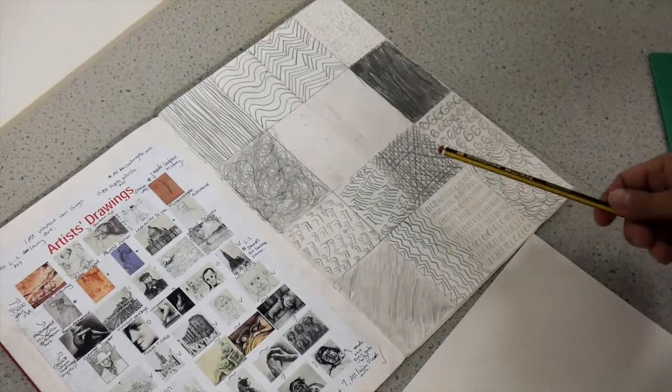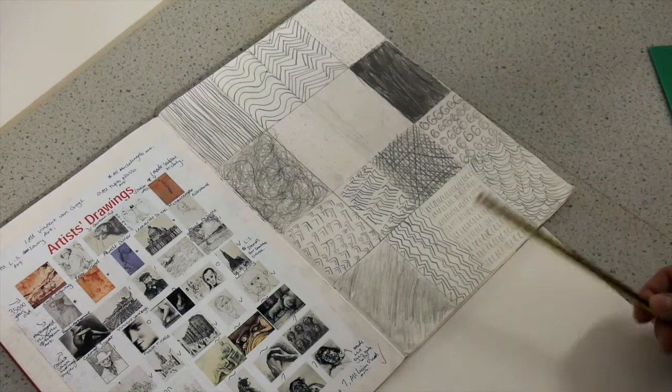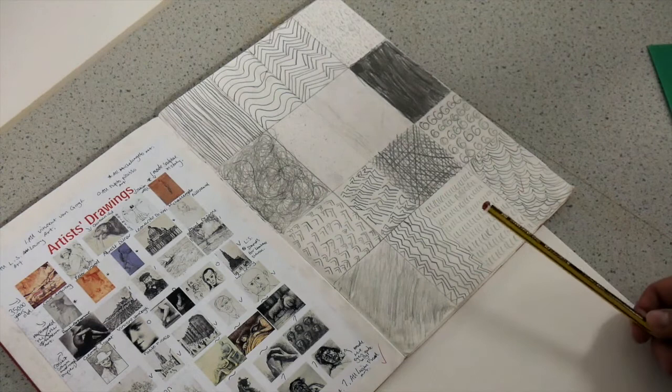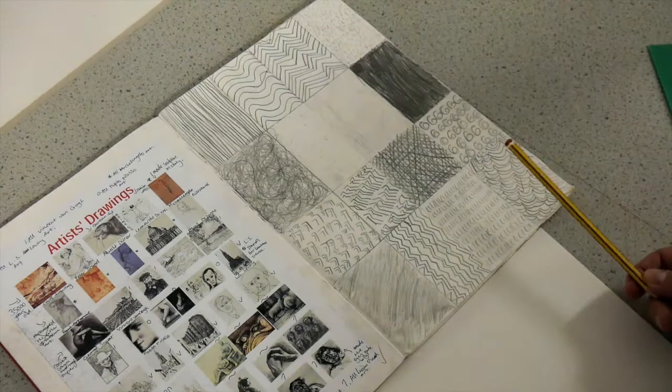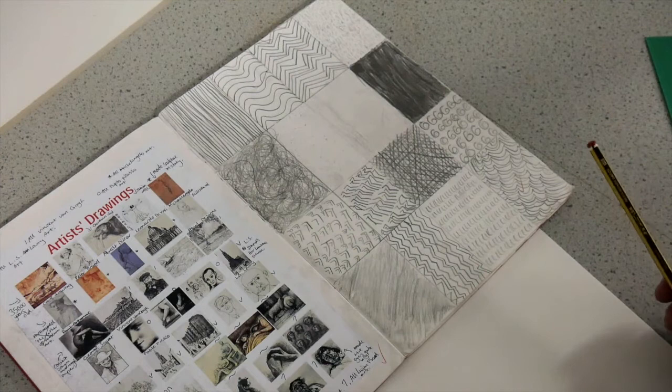So what we're going to do today is a mark making exercise which will link into improving your drawing skills. If you look at the artist drawings we look at throughout the course, you'll see that they're all made up of a series of marks, whether that's lines or cross hatching or shading or tonal work or even the odd squiggle and dot, to create the level of detail to make your drawings more effective.